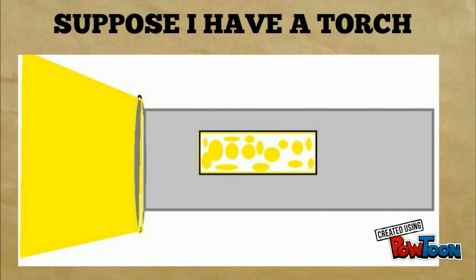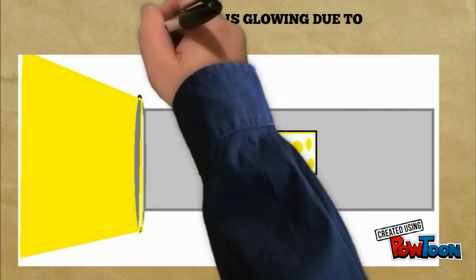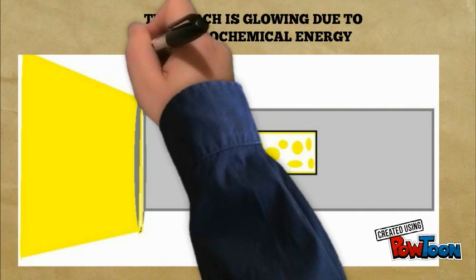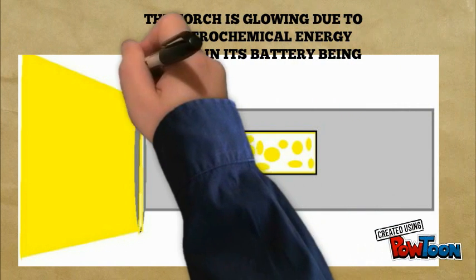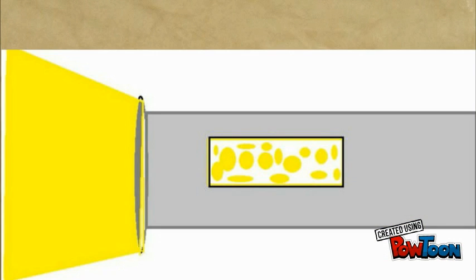Okay, let's take another analogy. Suppose I have a torch with a battery in the middle shown by yellow dots. The torch is glowing due to electrochemical energy stored in its battery being converted to light energy. Let's see how it happens.